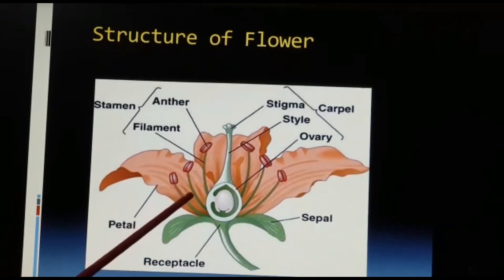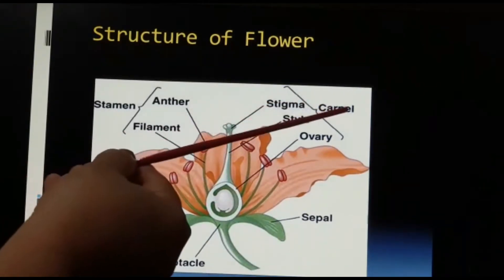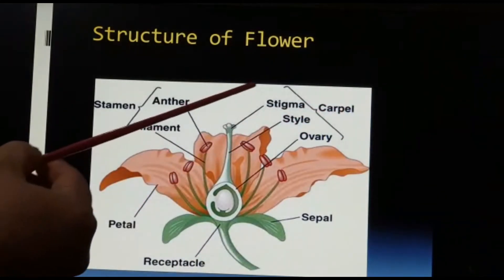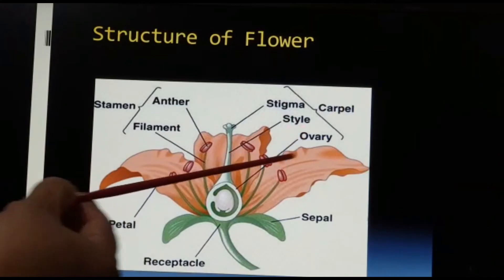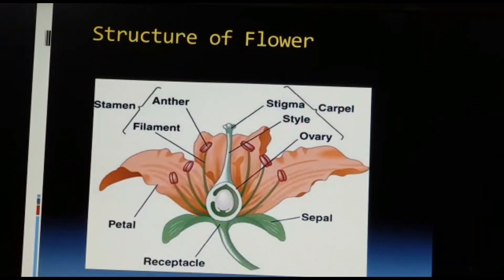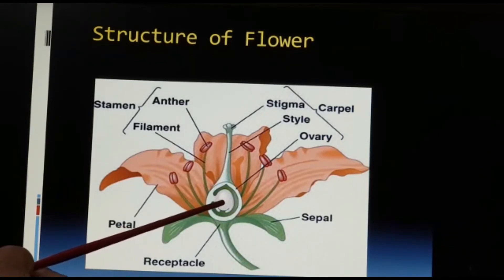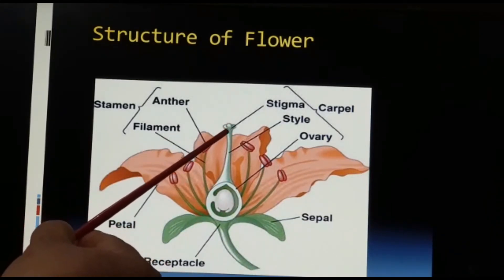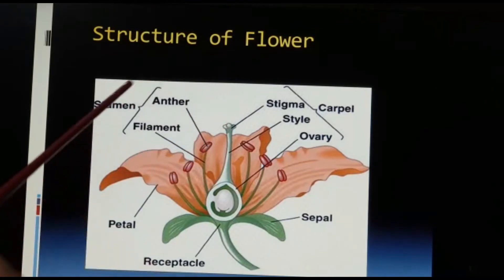I come to the next structure which is the gynoecium, or you can say a typical carpel. The carpel has got three parts: the stigma, style, and ovary. The ovary is a chamber where ovules or eggs are stored and they are waiting for fertilization. The stigma is the topmost receptacle part of the carpel whose main function is to receive the pollen.